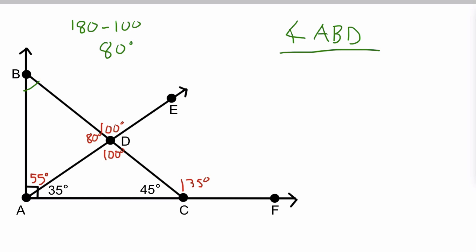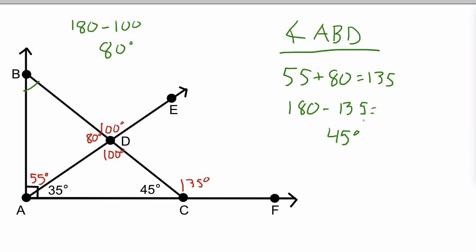We now have enough information to find the final angle. I'm going to take 55 plus 80, which gives me 135. Then I'll take 180 — because all three angles of a triangle add to 180 — minus 135, and that gives me 45 degrees. So that is the measure of angle ABD. I'll put that in: 45 degrees. I hope that was helpful — thanks for watching.